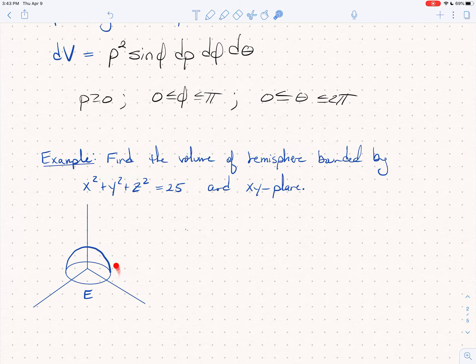This equation gives you the full sphere going all the way around. It's a full shell of a ball of radius 5.